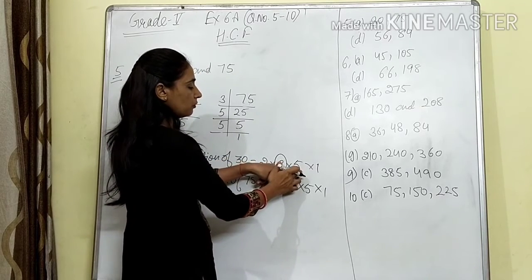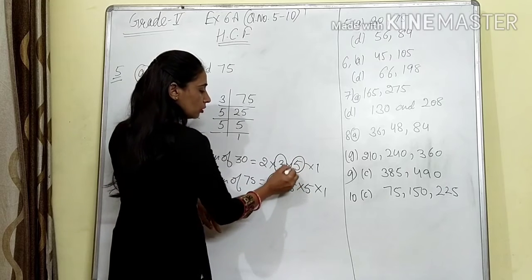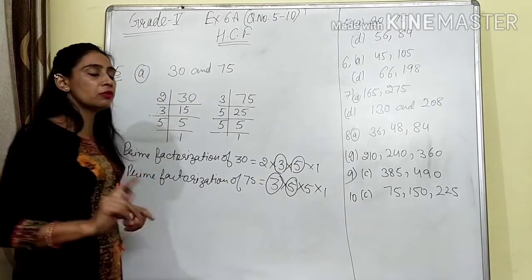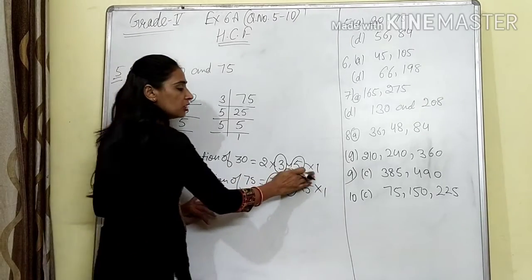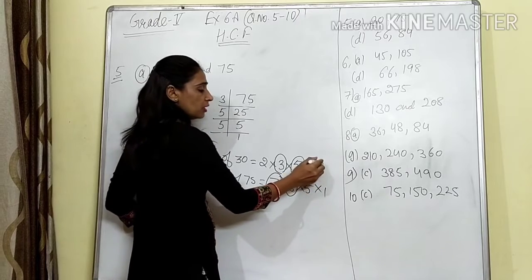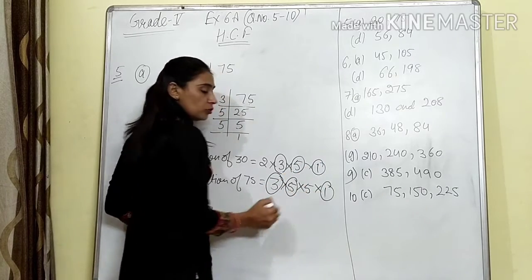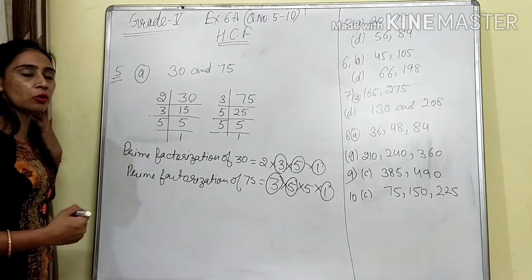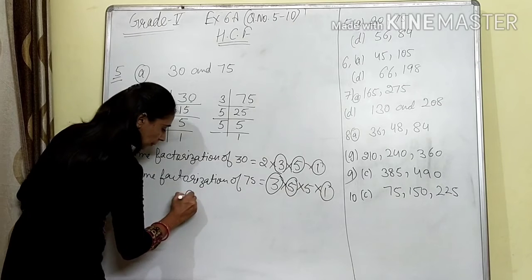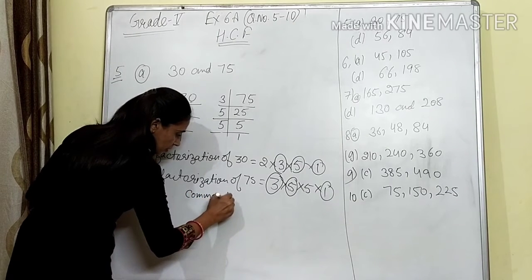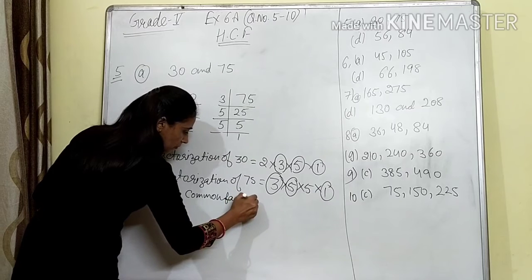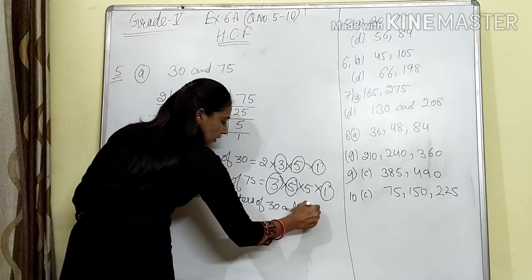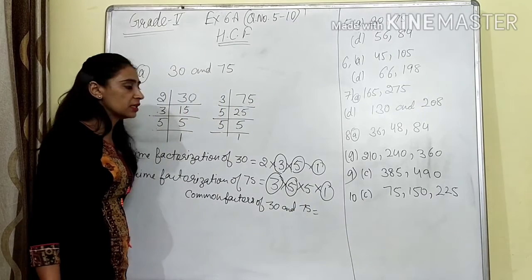After that, here is 5, and here also. But in 75 it appears 2 times, while in 30 it appears 1 time, so we select only 1. Now 1 is here and here also. The common factors of 30 and 75 are 3 and 5.